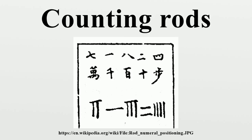In 1976, a bundle of West Han counting rods made of bones was unearthed from Qianyang County in Shanxi. The use of counting rods must predate it. The Book of Han recorded: they calculate with bamboo, diameter 1 fen, length 6 cuns, arranged into a hexagonal bundle of 271 pieces. At first, calculating rods were round in cross-section.